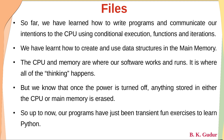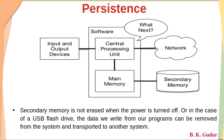We know that once the power is turned off, anything stored either in the CPU or main memory is erased. For example, if we are working on a bank transaction — after some withdrawal, debit, or credit — that data should be reflected in the account and should be available even after power failure. The data should persist even after power failure, so it must be stored in secondary memory.